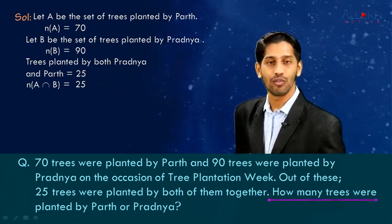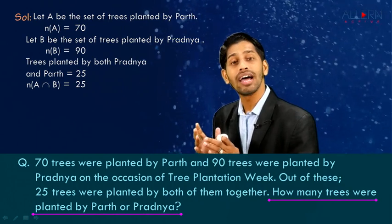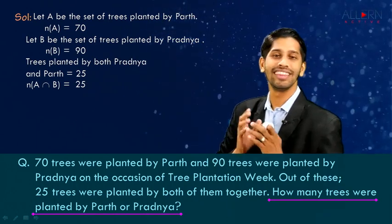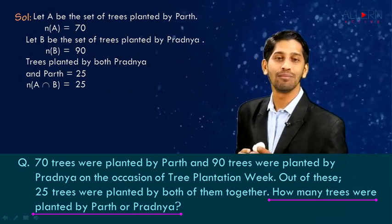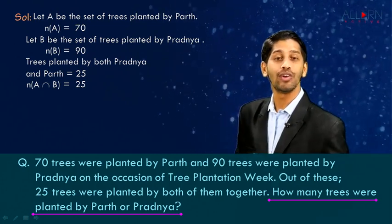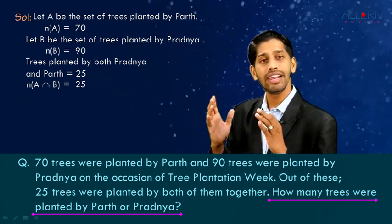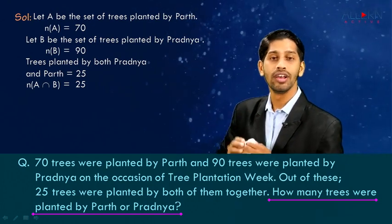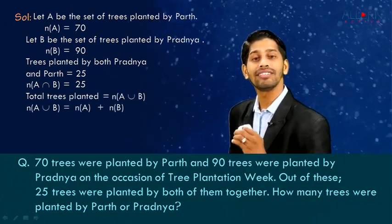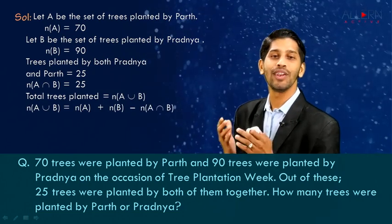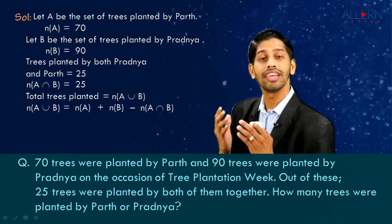Now let's see what exactly we need to find. We need to find how many trees were planted by Parth or Pratnya. When we come across a word like 'or,' 'either,' or 'at least,' it is nothing but the union. So we need to find the value of n(A ∪ B). Let's use the formula which we already know: n(A ∪ B) = n(A) + n(B) − n(A ∩ B).